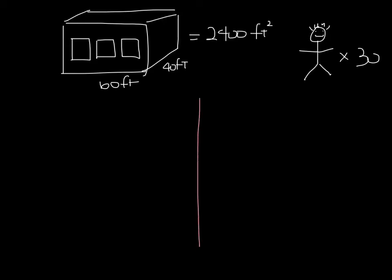Now let's compare how much airflow you would need for a traditional system versus a chilled beam system. If you had a traditional VAV system, you'd have about 1 CFM per square foot, so you'd have 2,400 CFM in this building.